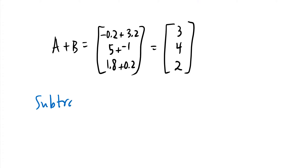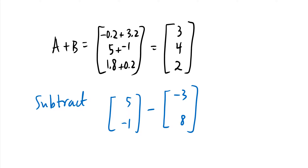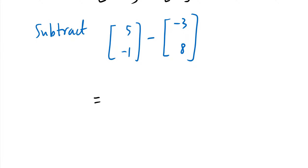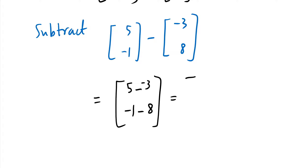Subtraction works the same way. For example, [5; -1] minus [-3; 8]: you compute 5-(-3) = 8, and -1-8 = -9, giving the result [8; -9].